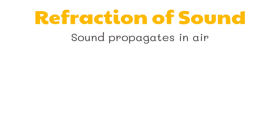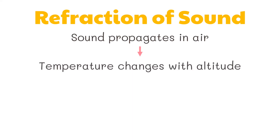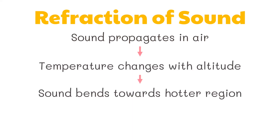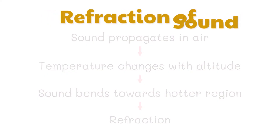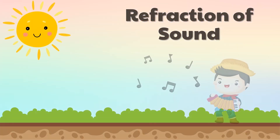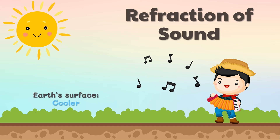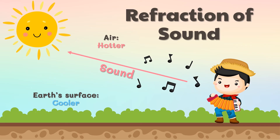When sound propagates in air where the temperature changes with altitude, sound bends towards the hotter region — refraction happens. The refraction is due to the different refractive indices of air because of the difference in temperature. During the day, when the sun is shining, the air near the Earth's surface is cooler than the air above. Because of this, sound would move from the cooler region, which is the Earth's surface, towards the hotter region, which is the air above. Thus, sound waves will be refracted to the sky.